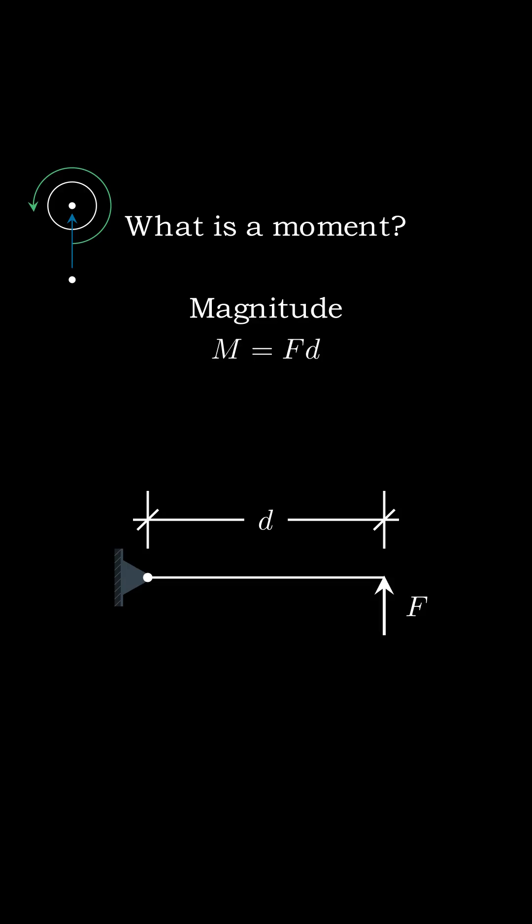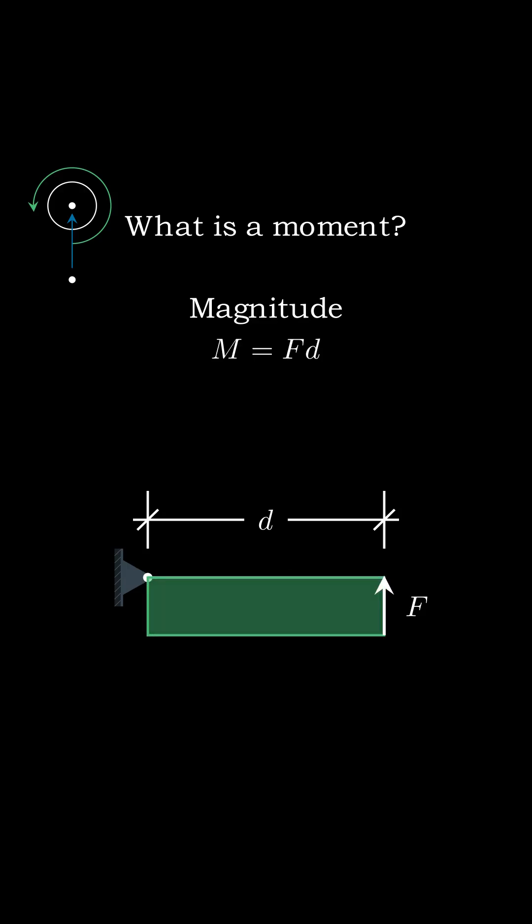It can be helpful to look at what this equation means geometrically. If we take the distance from the hinge to the force and the size of the force, and use those to draw the sides of a rectangle, then the area of this rectangle represents the magnitude of the moment. The bigger the moment, the faster it can make an object rotate.